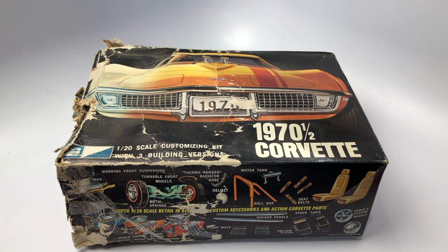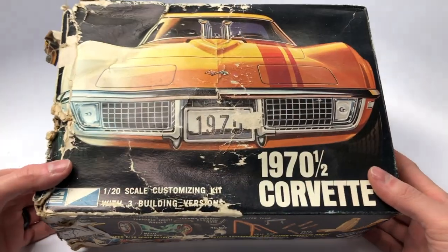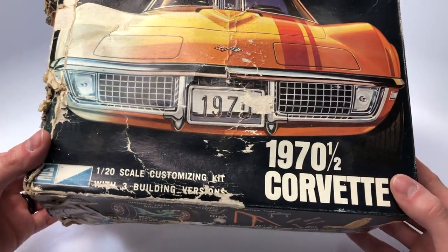Welcome to the Mile High Scale Modeler Channel. This is the MPC 3-in-1 70.5 Corvette in 1/20th scale, kit number 3070. Let's have a look at the box art.